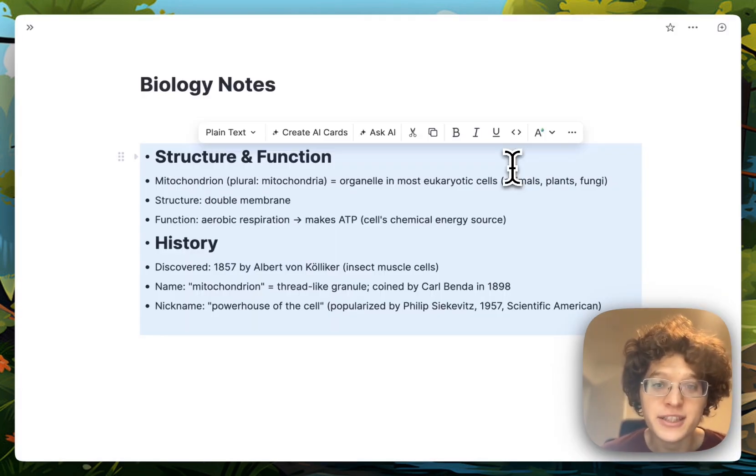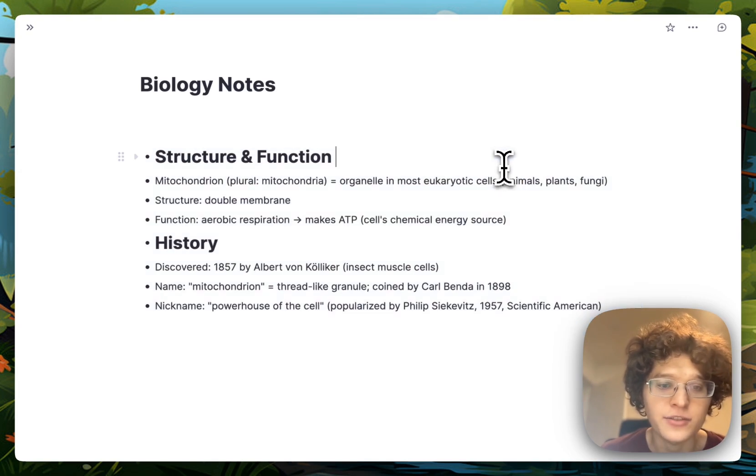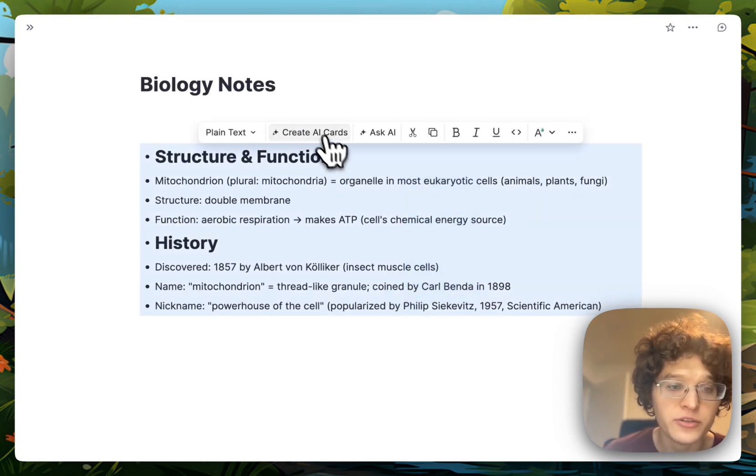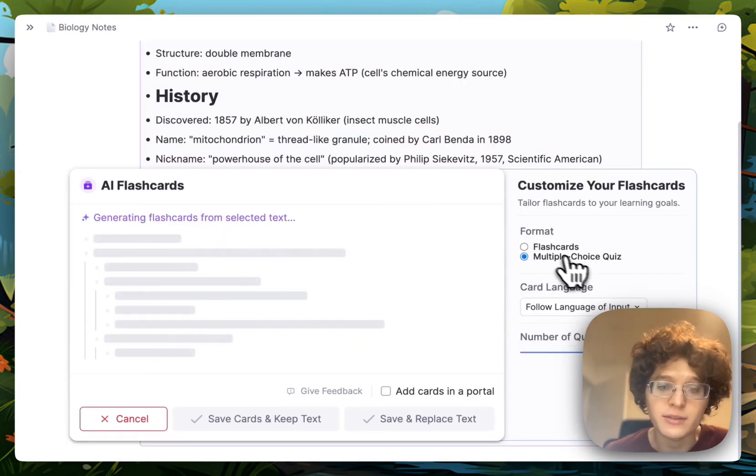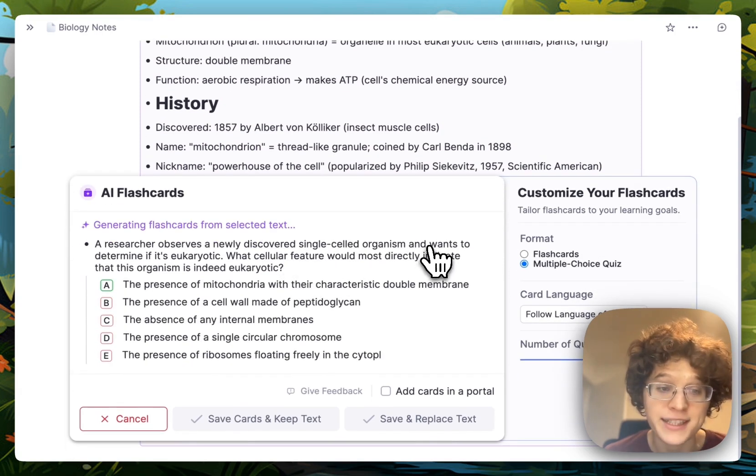You can also now generate multiple choice quizzes for any text. Just drag to select your cards, press create AI cards, change the format to multiple choice quiz, and you can see that a set of multiple choice questions are automatically written for you.